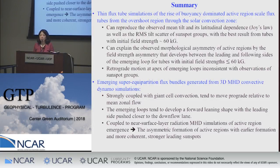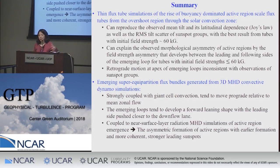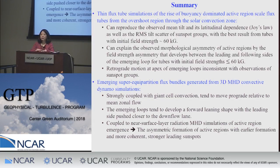Asked whether active region complexes on the sun give some sense of the giant cell structure, the presenter says it seems the simulations suggest active regions are controlled by downflow lanes—where sunspots form, they track it. Feng Chen ran a simulation showing that when the imposed flow field from the dynamo is turned off, the sunspots start to fragment, indicating that the downflow pattern is actually holding the sunspot together.